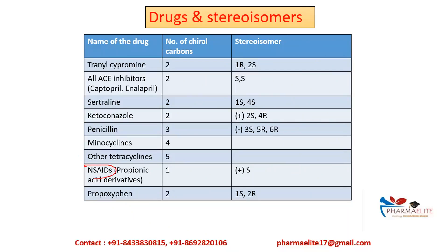Going further, for non-steroidal anti-inflammatory drugs — specifically all the propionic acid derivatives — it is the S isomer which is active. Similarly, for all ACE inhibitors such as captopril and enalapril, it is the SS isomer which is more active. For sertraline as well, it is SS. So we can group SS drugs together: sertraline, all ACE inhibitors, and NSAIDs.